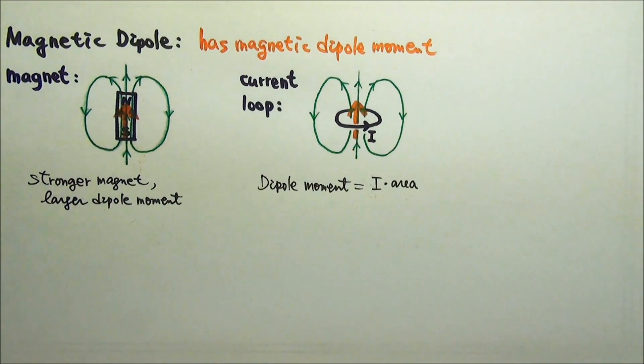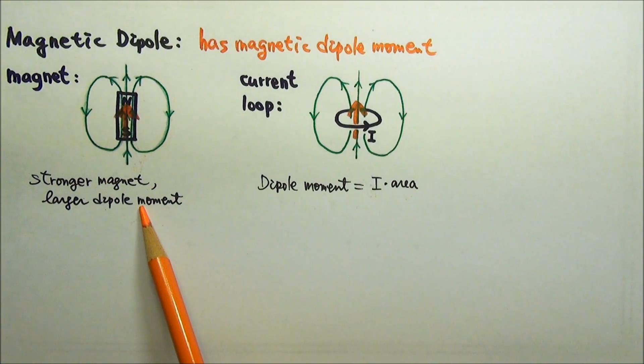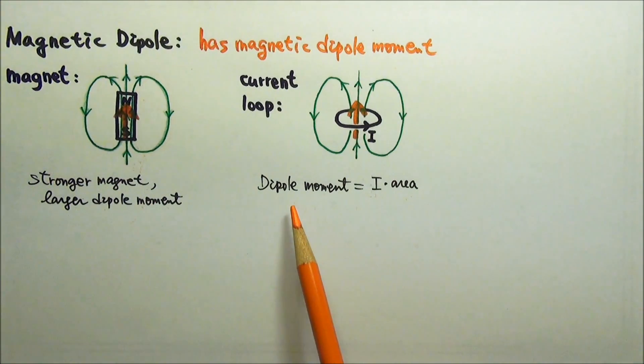As for the strength of a dipole moment, the stronger the magnet, the larger the dipole moment. And the dipole moment for a current loop is current times the area of the current loop.